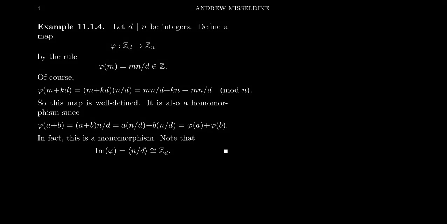In this video, I want to talk about some homomorphic images of cyclic groups. And it turns out it's very easy to describe when you have a homomorphism between cyclic groups and when you do not.